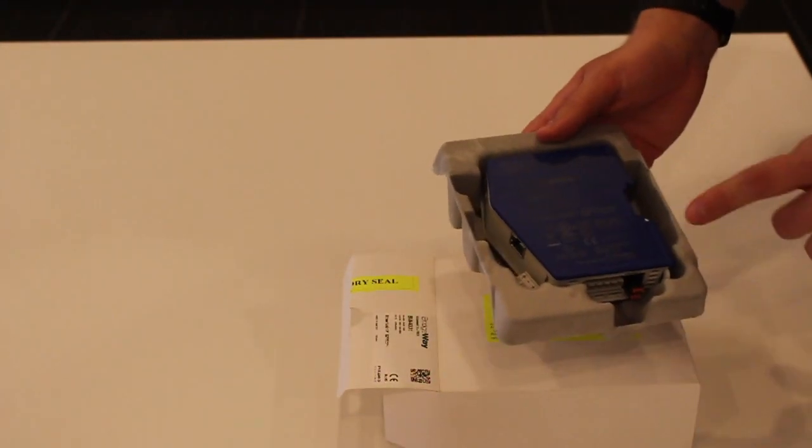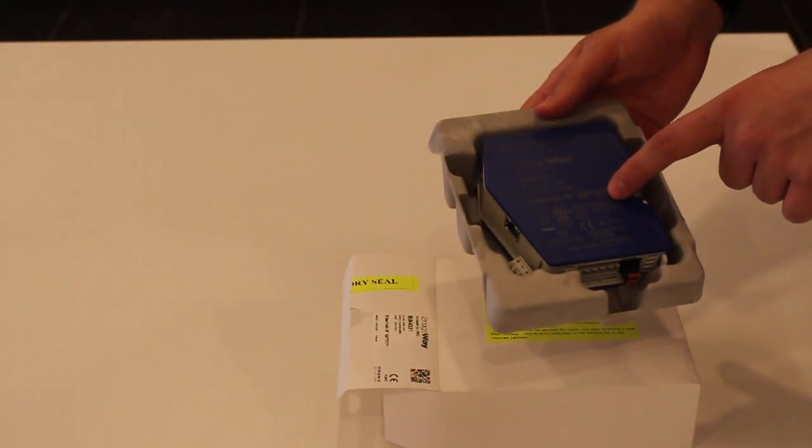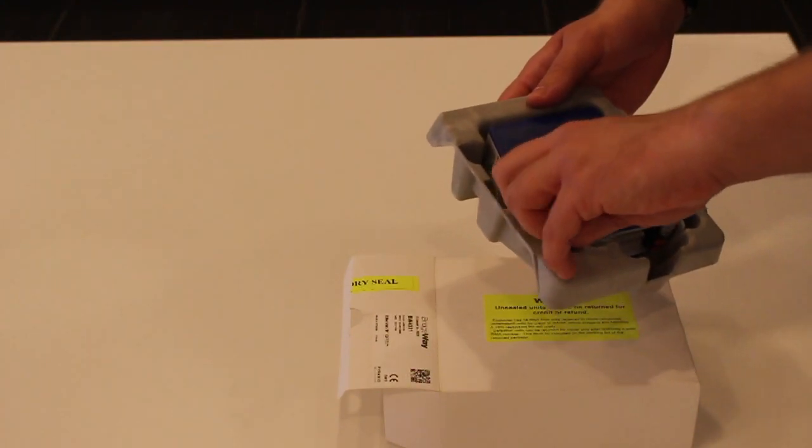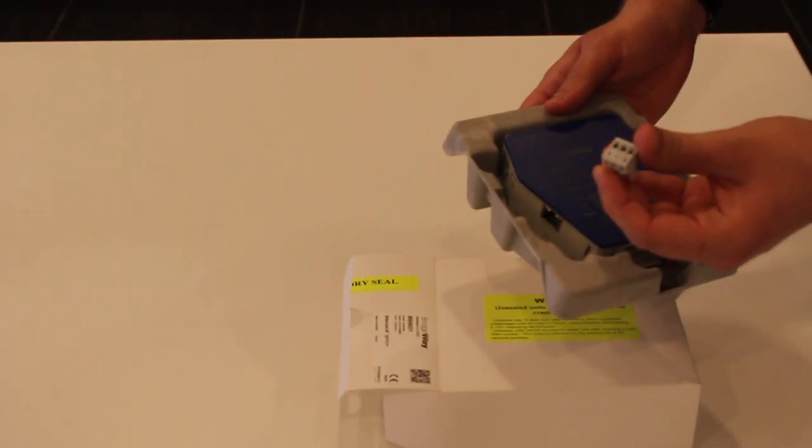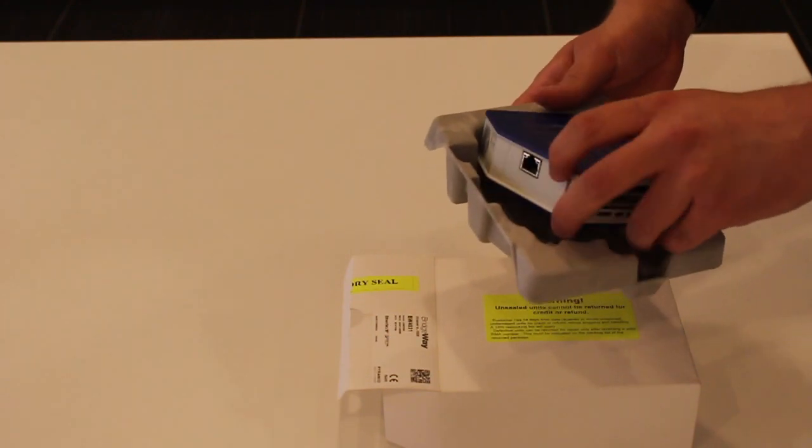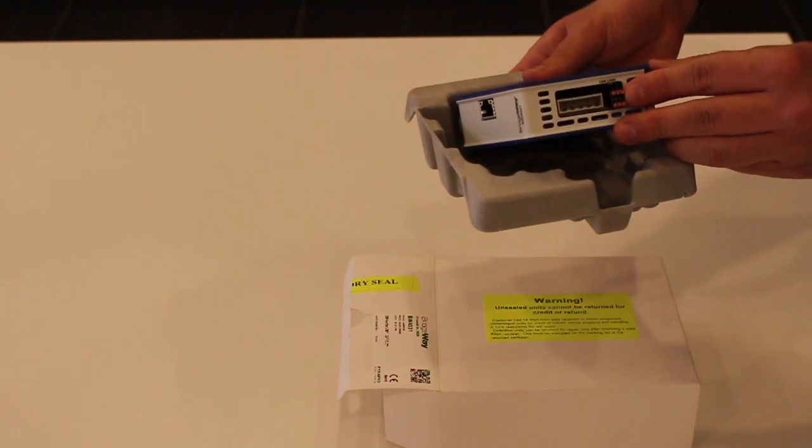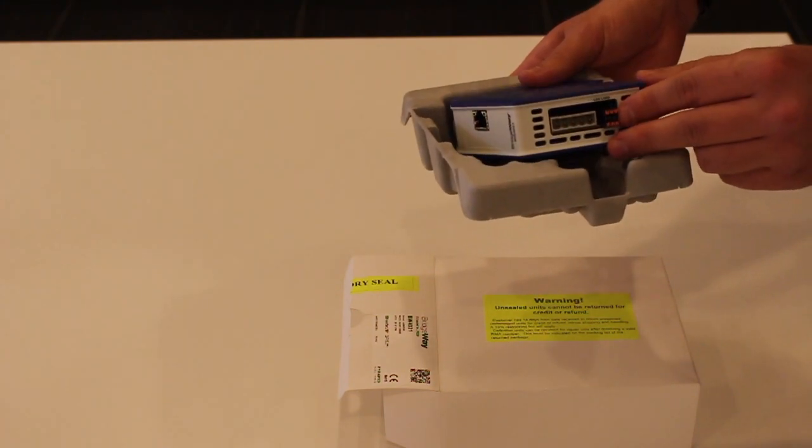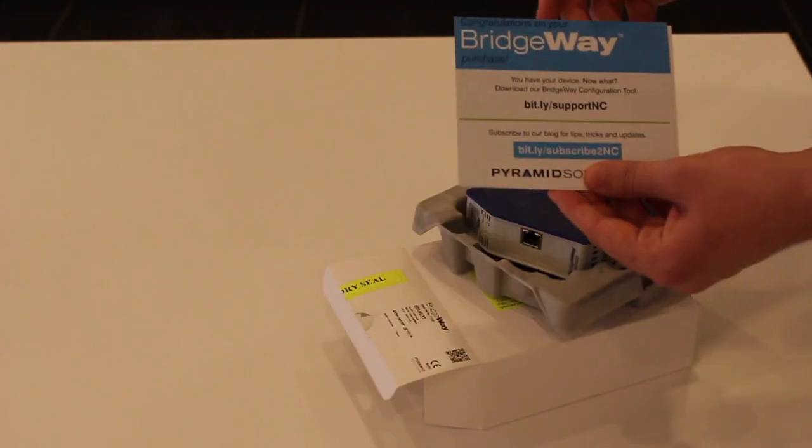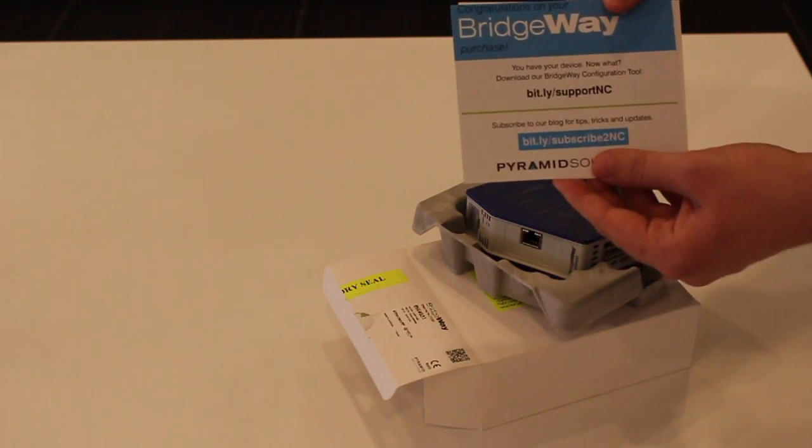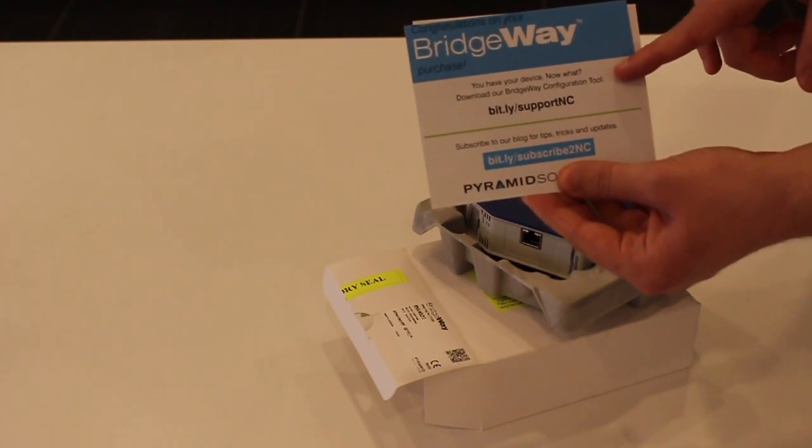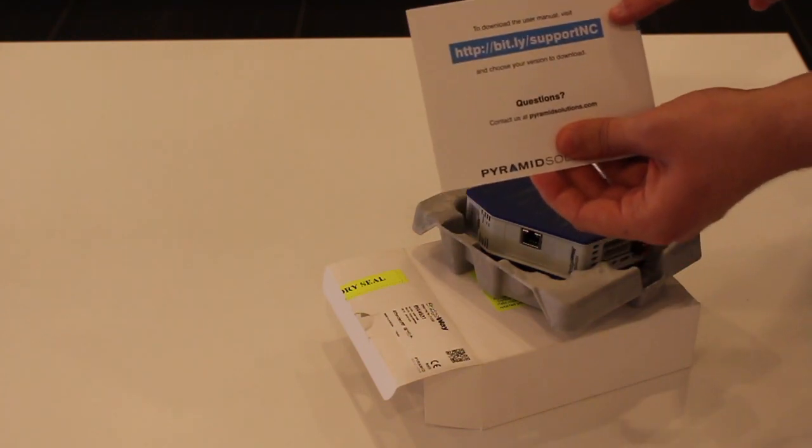When you open the box, you will find the BW4031 gateway module, a 3-pin terminal block connector used to supply DC power to the device, a 6-pin terminal block connector which should be attached to the device used for connecting the module to a J1939 CAN network. You'll also find some helpful literature that tells you where to download the configuration tool as well as the user manual.